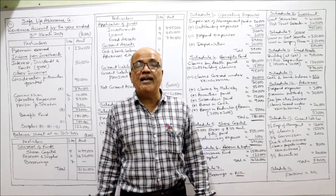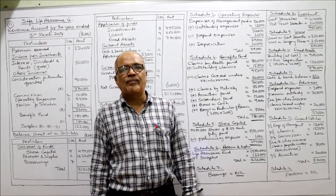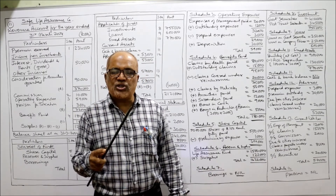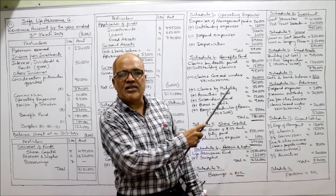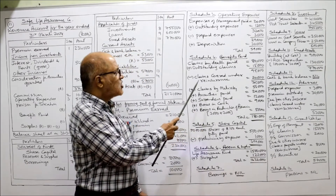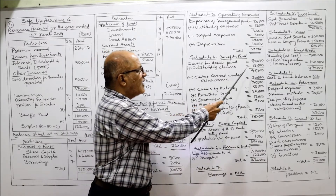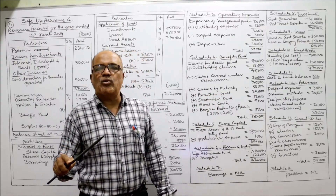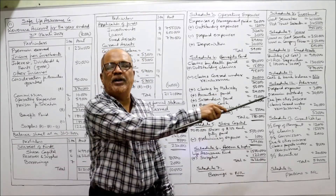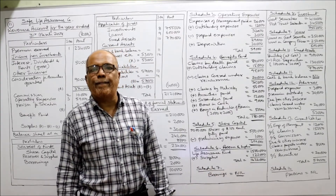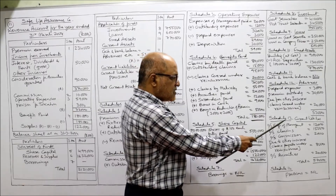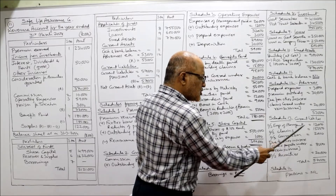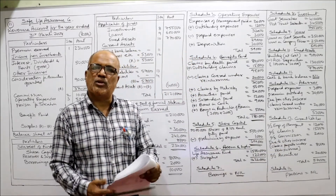Adjustment 2: further claims by death intimated — 15,000. 'Intimated' means outstanding claims. This outstanding claim will be added to claims in Schedule 4 — 'add outstanding claims 15,000.' That same 15,000 will again be taken in the balance sheet under Schedule 13, current liabilities: 'outstanding claims 15,000.' Double effect complete.